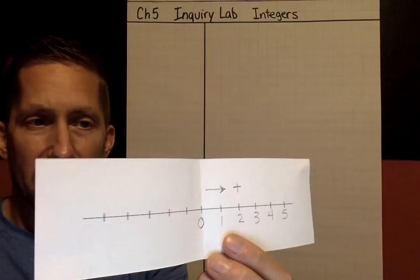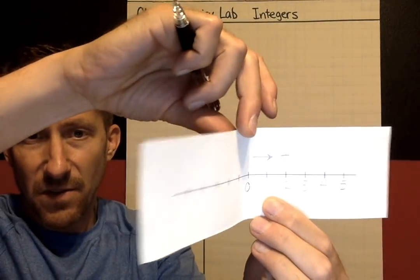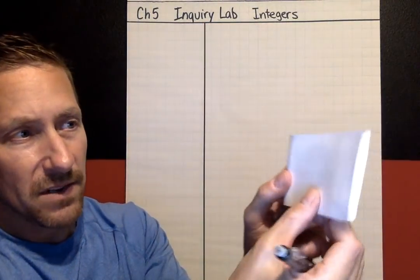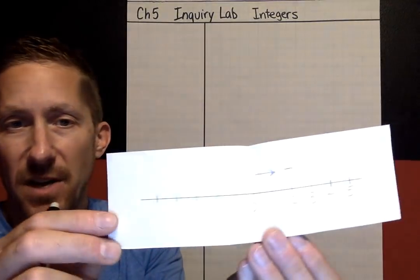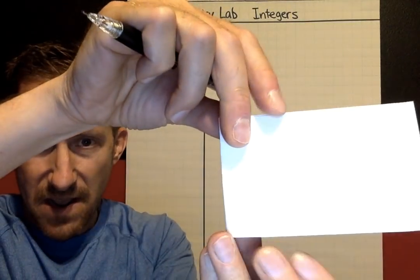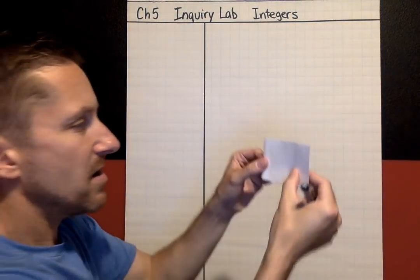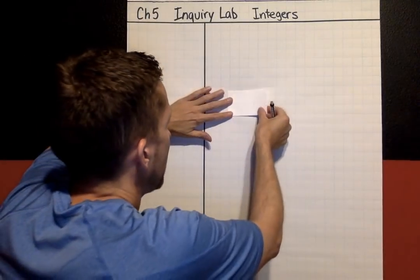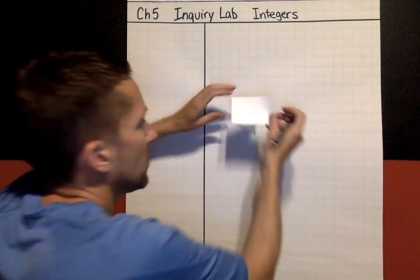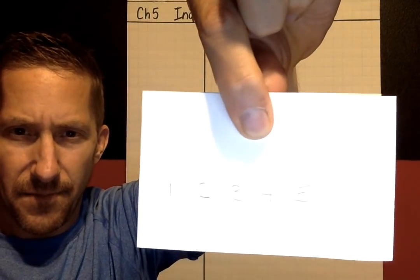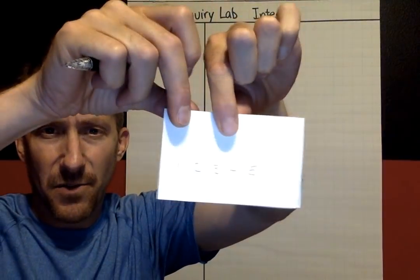The next thing I want you to do is fold the number line over again and hold it up to the light. You can actually see faint numbers through the page. I'm going to trace those numbers right through the page — one, two, three, four, five — traced right through.